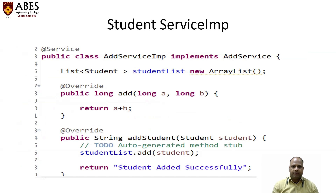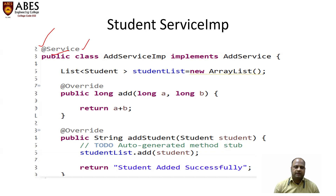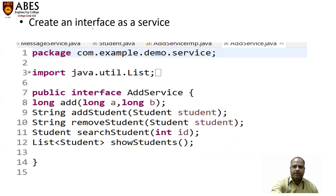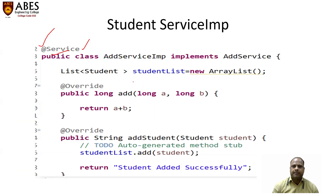This is the service implementation class. Whenever you use your service layer, you need to add the @Service annotation before the class, because I want to make this class a service class. Just like when I created the controller I used @RestController as a class-level annotation, I am applying the same concept here with @Service. In this service implementation, I am implementing the AddService interface and all its methods.